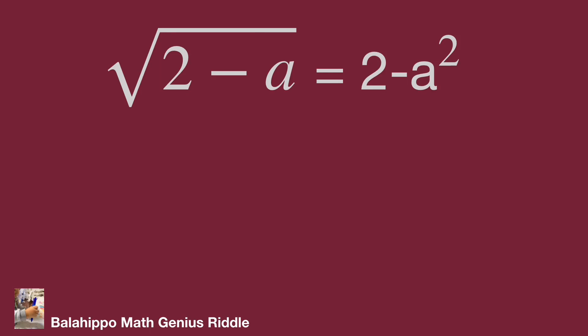The question: √(2−a) = 2 − a². There are a square root and a square in this equation. If we square both sides of the equation, we will get a power-of-4 term. We may find the value of a through hard work handling a degree-4 equation, but I am going to make it easy.